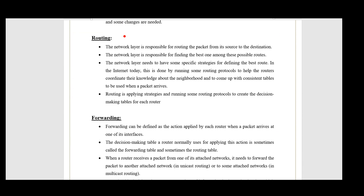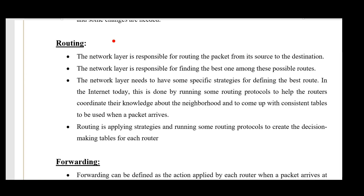Routing involves taking data from one system and delivering it to another in a different network. Unlike the data link layer, which delivers data hop to hop, the network layer delivers data from one computer to another even when both are on different networks. Data is delivered over the network using routing tables.